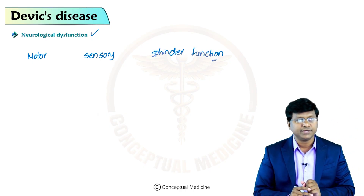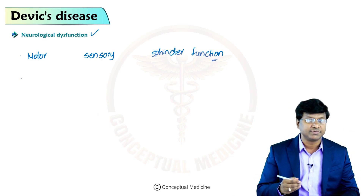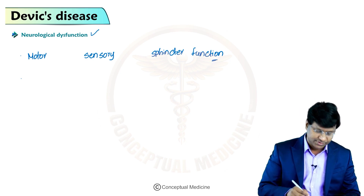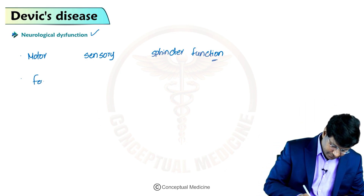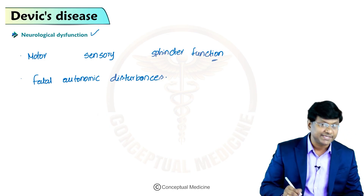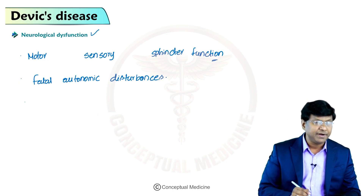Apart from motor, sensory, and sphincter dysfunction, these individuals also have fatal autonomic disturbances. Because of these fatal autonomic disturbances, they develop orthostatic hypotension.